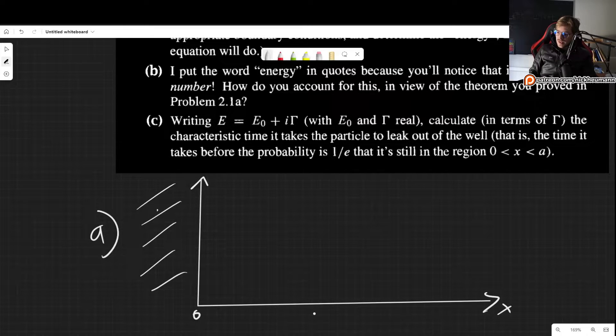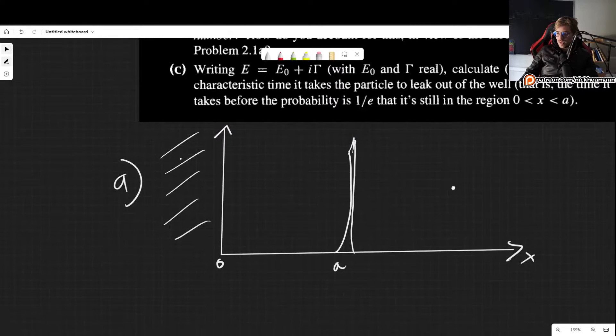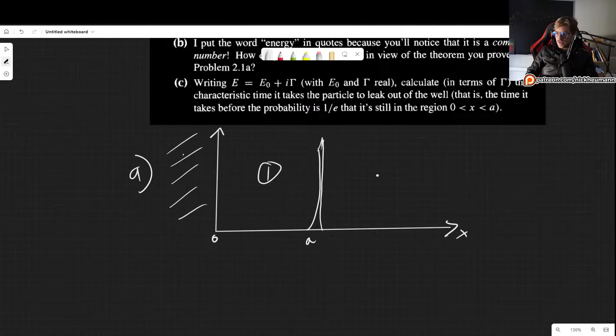And then at x equals a, we have this delta function here. Of course, not a very good representation, but this is just that we know that there is a delta function there. So we have two regions of interest.